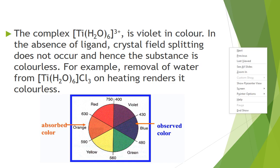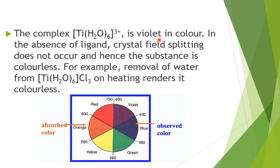This complex is violet in color. But in the absence of ligands, crystal field splitting will not take place, and hence the substance will be colorless. For example, if you take this compound and remove water from it by heating, then it becomes colorless.